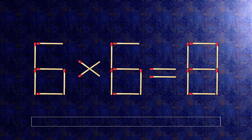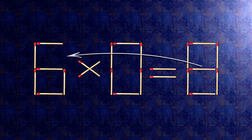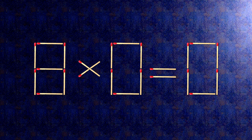How this puzzle is solved: to do this, all we need to do is move this match right here, and this match right here. Now when we check the condition, eight times zero is zero. The task is done and the puzzle is solved.